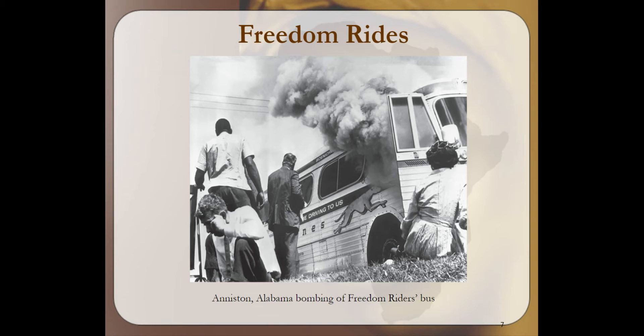During the run of the rides, a group of Freedom Riders were traveling to Mississippi and were arrested. Another bus was bombed. By the end of the summer, 300 Freedom Riders were arrested. John Lewis, a civil rights activist who would later become a United States representative, participated in the Freedom Rides and was an active member of the Civil Rights Movement.